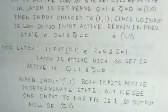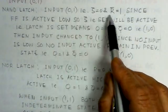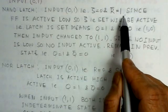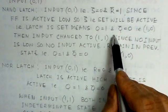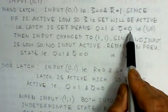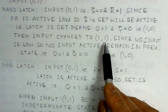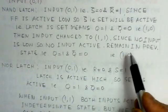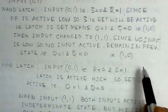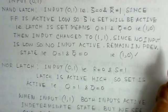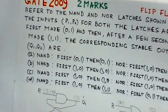So for the NAND latch, the output was 1,0 in the earlier state and remains 1,0 in the next state as well. Now we observe the NOR latch. The initial input is P1=0, P2=1. Here P1 is reset and P2 is set. Since the NOR latch is active high, when set input P2=1 is active, the output Q will be high. So Q1=1 and Q2=0, giving output 1,0.